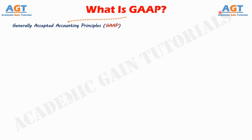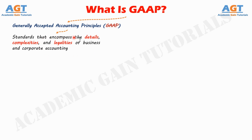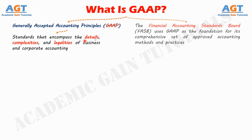Generally accepted accounting principles, or GAAP, are standards that encompass the details, complexities, and legalities of business and corporate accounting. The Financial Accounting Standards Board, FASB, uses GAAP as the foundation for its comprehensive set of approved accounting methods and practices.